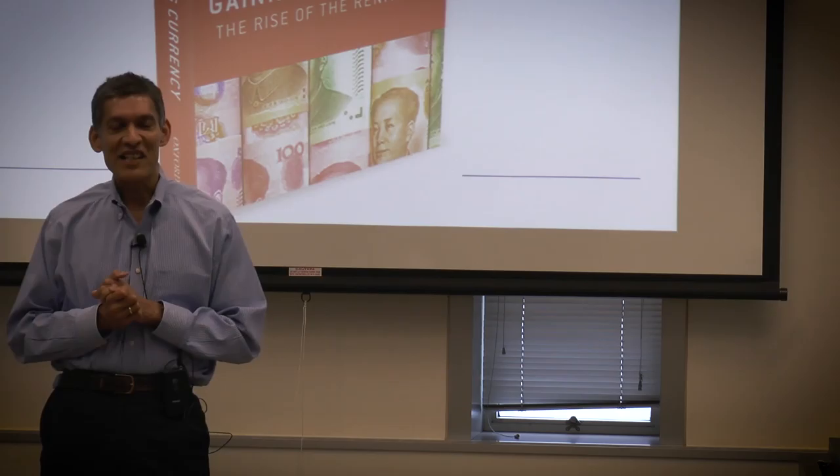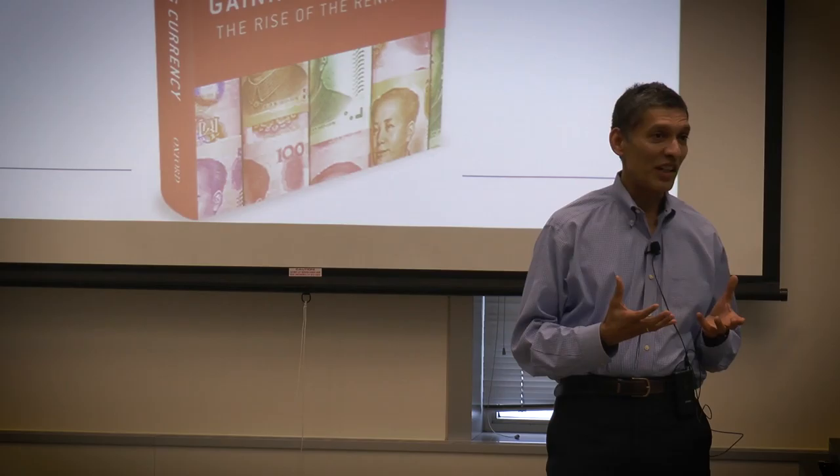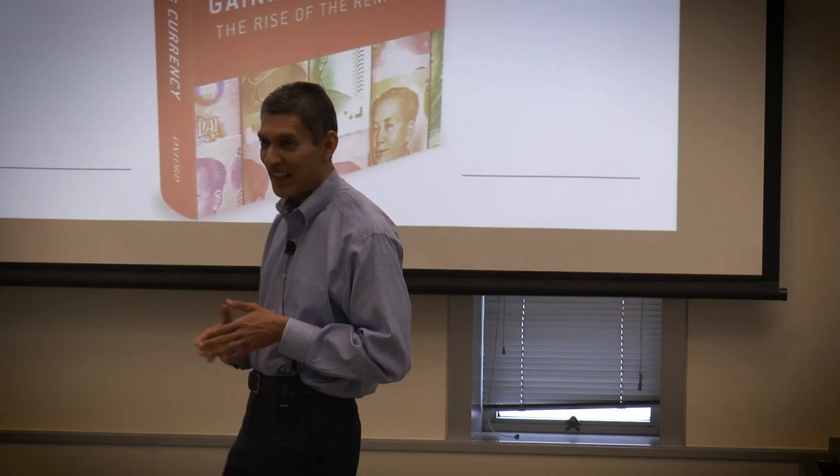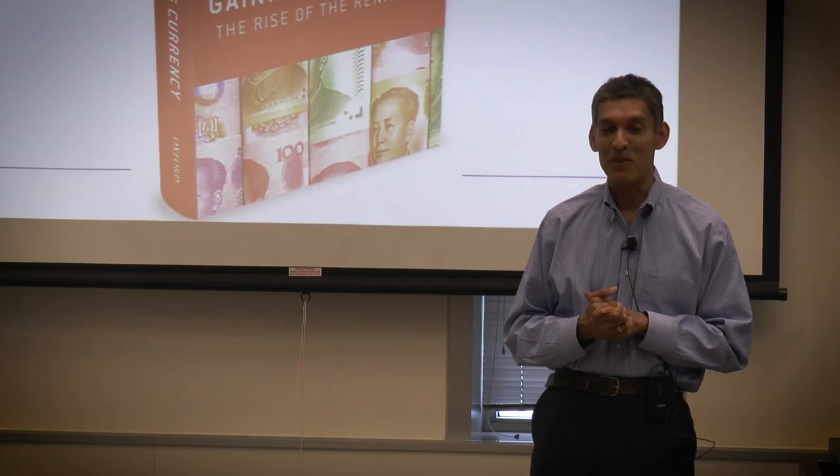Why do we start back in 200 BC? It turns out that a lot of this book is about money. The Renminbi is the name of the Chinese currency, and the form in which most of us know and use money is, of course, in the form of paper currency. And it turns out that paper currency was actually invented in China. That's not so surprising if you think about the fact that paper was invented in China.